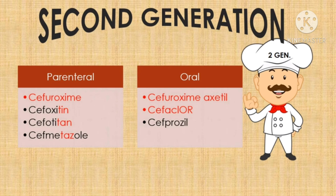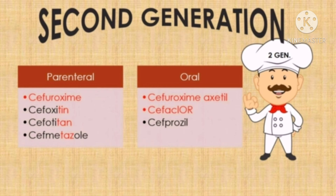The second generation contains everything else that does not fit into other patterns discussed earlier. There are two exceptions: cefaclor and cefuroxime. Cefaclor contains 'FA' within the word but is a second generation medication, not a first generation. The second exception is cefuroxime, which ends with 'ME' but is a second generation cephalosporin rather than a third generation.